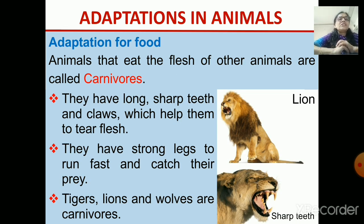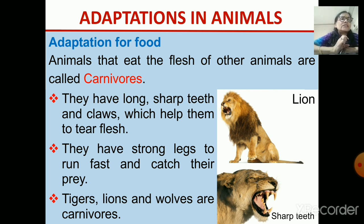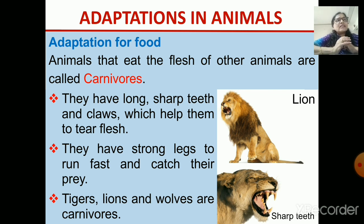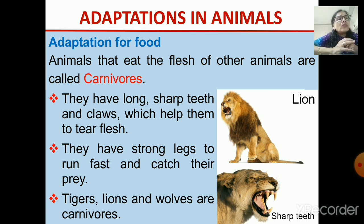The animals which eat the flesh of other animals are called carnivores. What are the adaptations? They have got sharp teeth — long sharp teeth like canines — so that they can tear the flesh of animals. They are carnivores, they eat other animals, so they can tear and then eat. Their claws are also very sharp so that they can hold their prey. Examples are lions, tigers, wolves, etc.